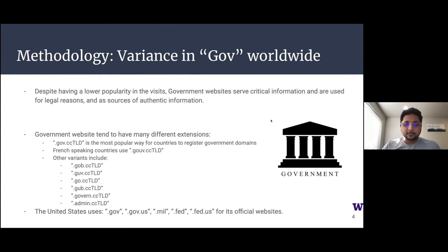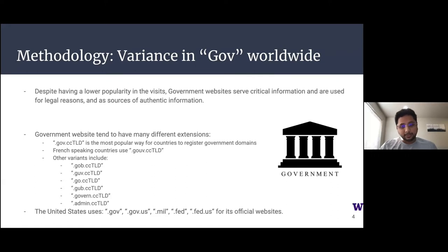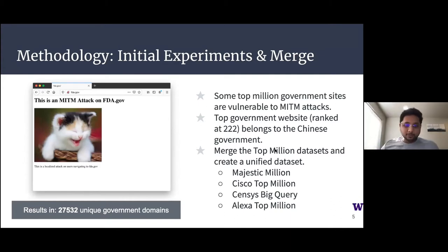Government websites across the world are highly variable, and from an ICTD perspective it's interesting to evaluate how diverse technology infrastructure, technical backgrounds, and linguistic differences impact security. Even within domain names, government websites use very different extensions — the US uses .gov or a .us country code variant, while French and Spanish-speaking countries use .gouv or .gob. We take into account all these variances when measuring adoption in the long tail of government websites. We could even perform an active attack on a popular US government website within the top million and serve a picture of a cute cat, indicating how even top-million websites are vulnerable to monster-in-the-middle attacks.